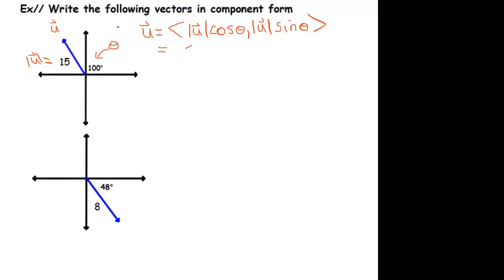And this is easy enough. We have all the information. If we have a calculator on us, we can just write it out and plug it in. So this is 15 cosine of 100 degrees, comma, 15 sine of 100 degrees.